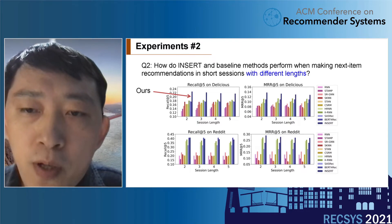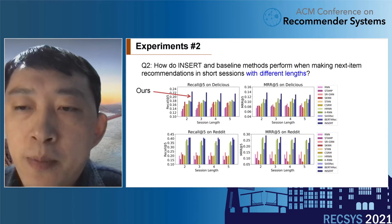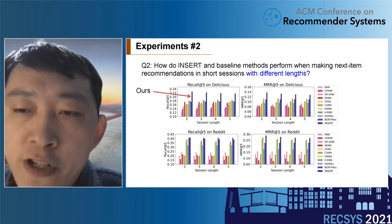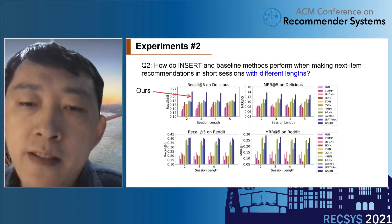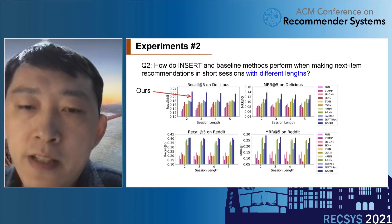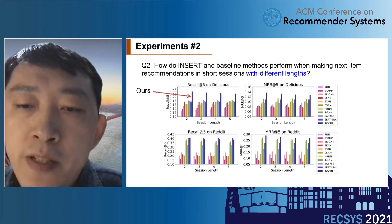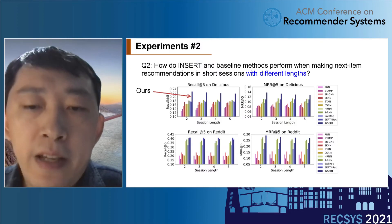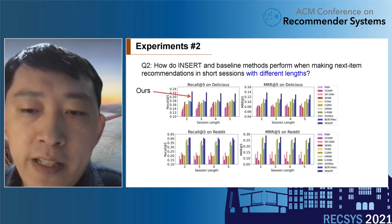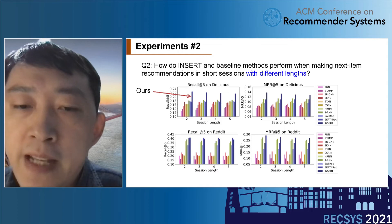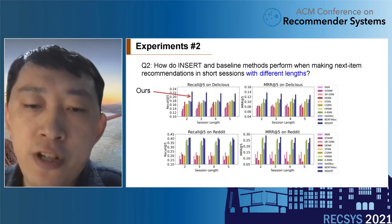In the second group of experiments, we compare InShot and all baselines for short sessions of different lengths. The figures show that the shorter the session, the more significant the performance improvement of InShot over the baseline models. Therefore, InShot is better at improving the performance of next item prediction in short sessions.